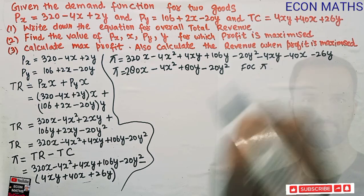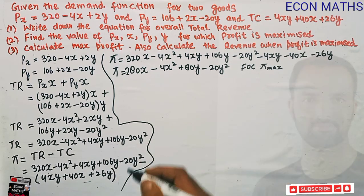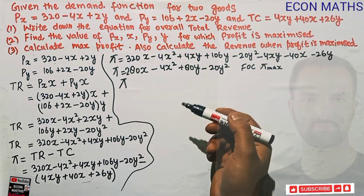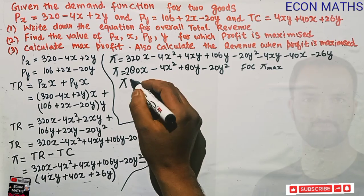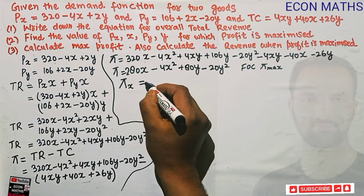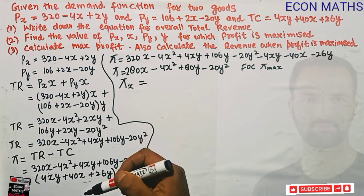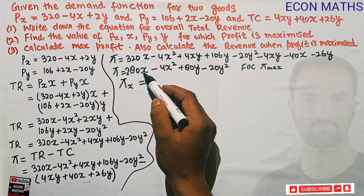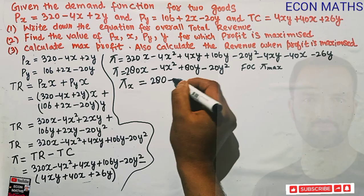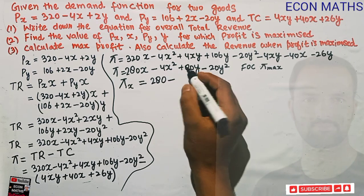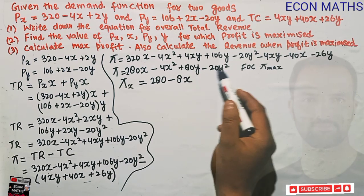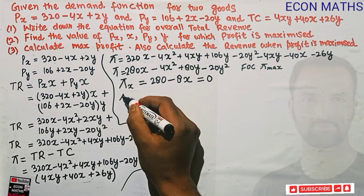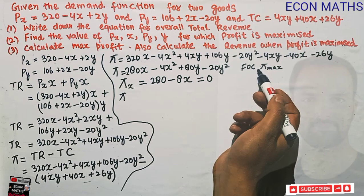The first order condition for profit maximization requires that the partial derivatives of the profit function equal zero. Since we have two products, we need two conditions. First: ∂π/∂X = 0, which gives 280 - 8X = 0.